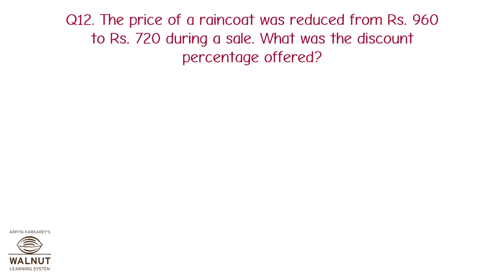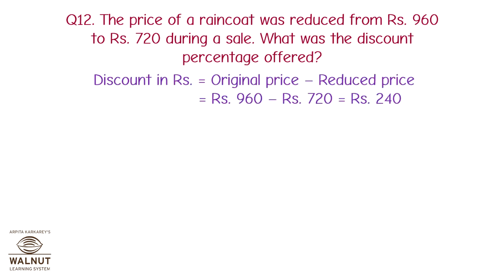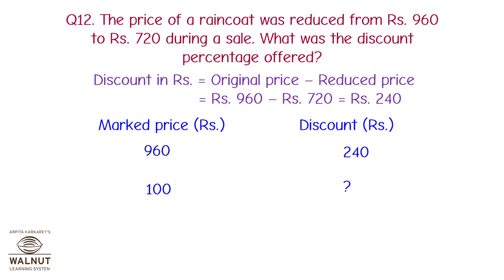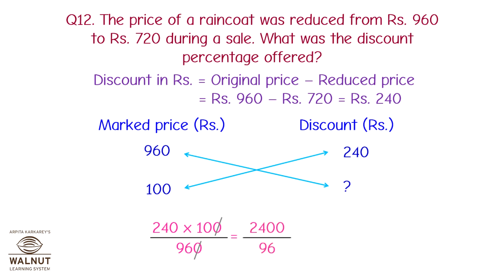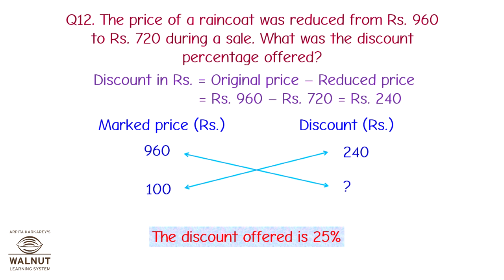The price of a raincoat was reduced from Rs. 960 to Rs. 720 during a sale. What was the discount percentage offered? Discount in rupees = Rs. 960 − Rs. 720 = Rs. 240. When the marked price is Rs. 960 the discount is Rs. 240, so when the marked price is Rs. 100 the discount is 240 × 100 / 960 = 2,400 / 96 = 25%. The discount offered is 25%.